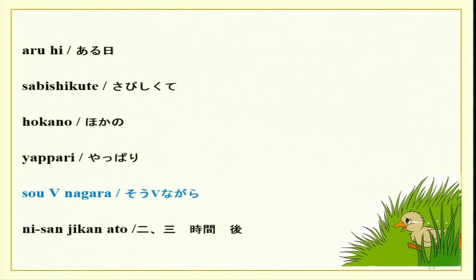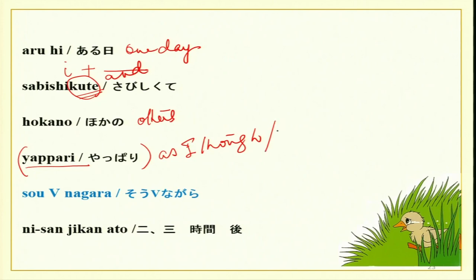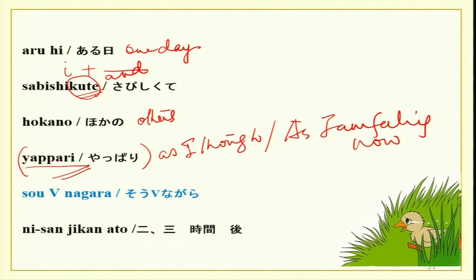Aru hi means 'one day,' as in English storytelling. Mukashi mukashi means 'once upon a time.' Sabishikute — i-adjective plus kute meaning 'and.' Yappari is new — it means 'as I thought' or 'as I expected,' expressing an impression or feeling that matches what was anticipated. It can be positive or negative. Yappari so datta — that is exactly what I had thought. Yappari kore no ho ga tadashii desu — whatever you may say, this is what is correct.